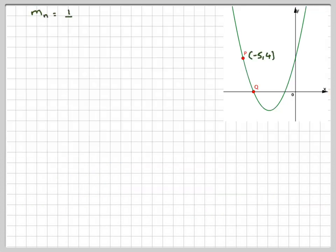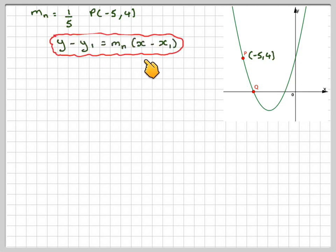We've got the gradient of the normal is 1 fifth, and we've got P is the coordinate minus 5, 4. Using y minus y1 equals MN times x minus x1, or you can use y equals mx plus c if you prefer that method. I prefer this method. We know that this is x1, y1. This is MN.